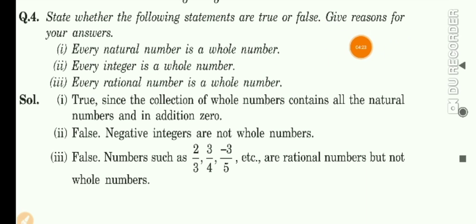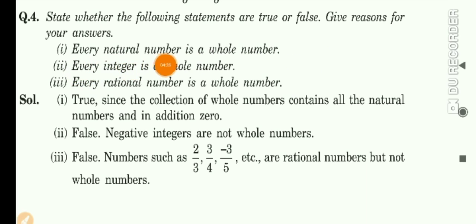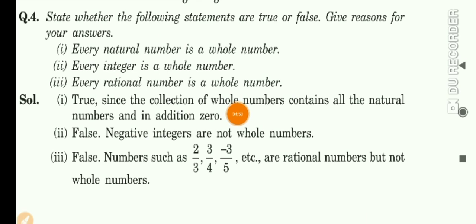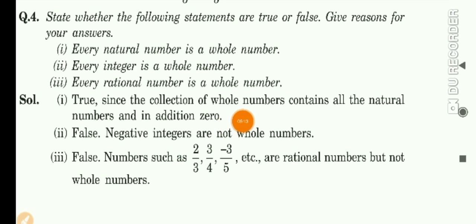Question number 3 is true or false — also give a reason if the value is true, why true, and if false, why false. The first one is: every natural number is a whole number. Answer is true, because all natural numbers are 1, 2, 3, 4, 5... and in whole numbers we only additionally include 0. So all natural numbers are contained in whole numbers — true, since the collection of whole numbers contains all the natural numbers and in addition, zero.